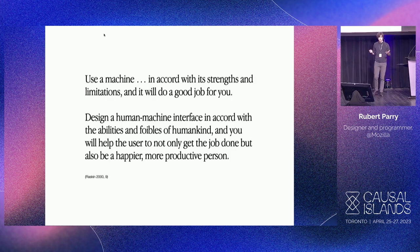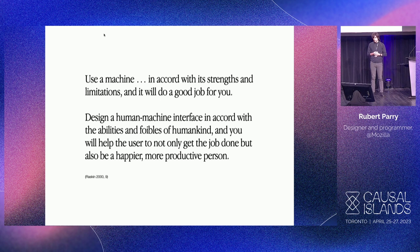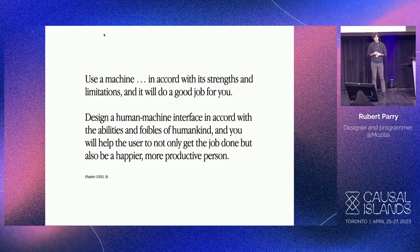In the title of this talk, 'humane' is a deliberately chosen word — it's used in the sense that Geoff Raskin used it. He wrote a book called The Humane Interface in 2000. I'll read this quote: 'Use a machine in accord with its strengths and limitations and it will do a good job for you. Design a human-machine interface in accord with the abilities and foibles of humankind, and you will help the user not only get the job done, but also be a happier, more productive person.' So we don't want to just build an interface that fits the machine — we also want to think about what's the shape of the user, and how do we build an interface that fits that.